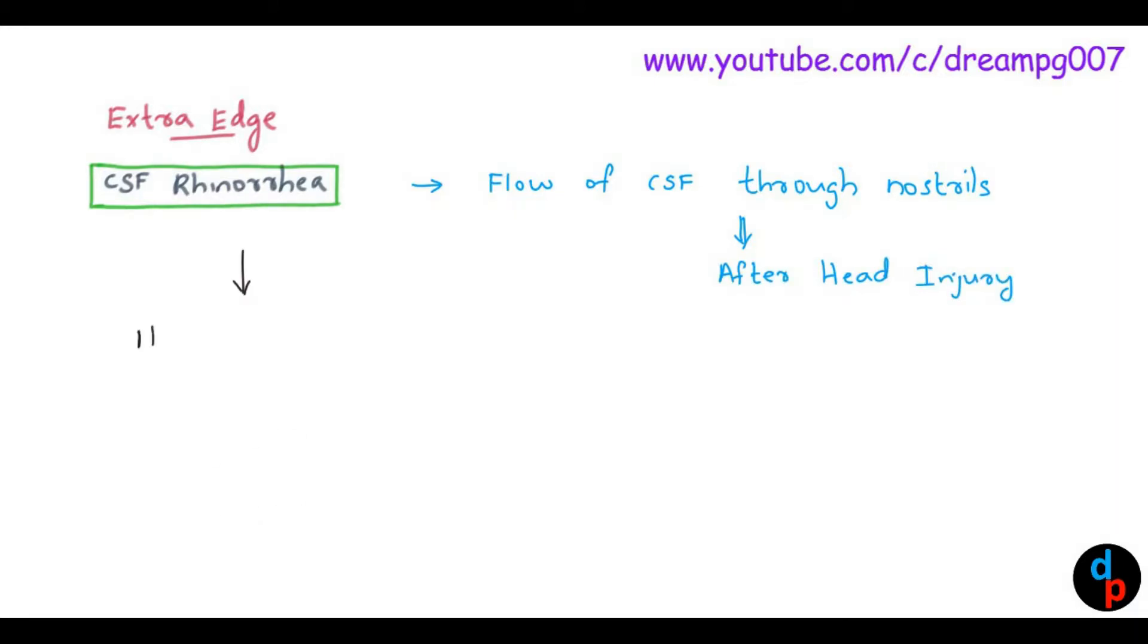Halo sign or the target sign is seen in the handkerchief in patients with CSF rhinorrhea. The central dot represents the blood and the yellow portion represents the cerebrospinal fluid.